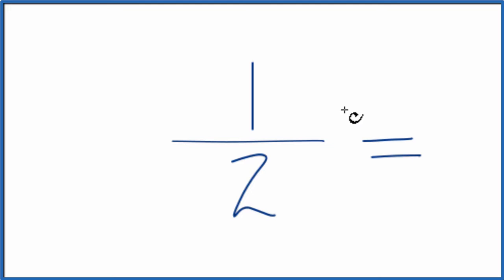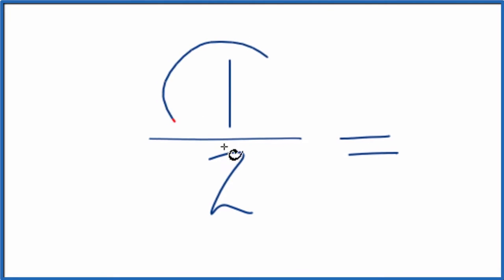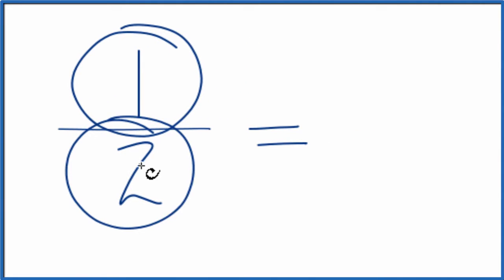To do that, we need to find a common factor, something that goes into 1 and 2 evenly.